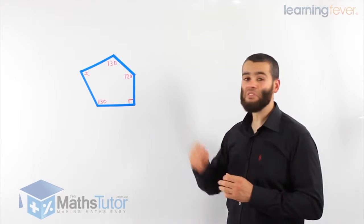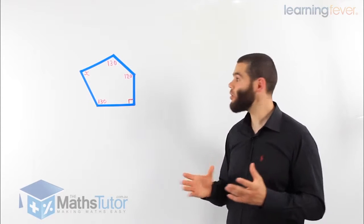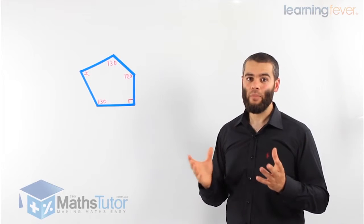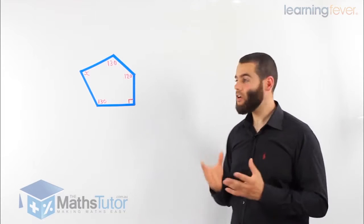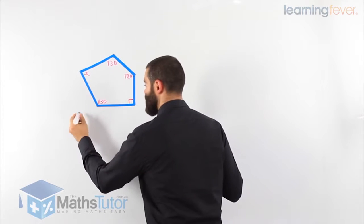So to find the missing angle, we use the same formula which is the angle sum. We would like to know what is the total that all these angles add up to. Now a pentagon, because it's a polygon, we can use the formula to find the angle sum first.